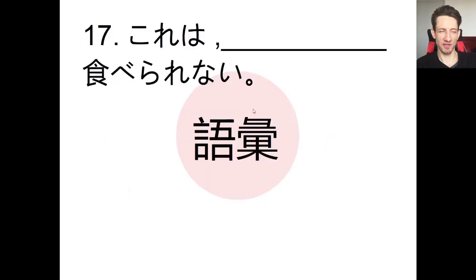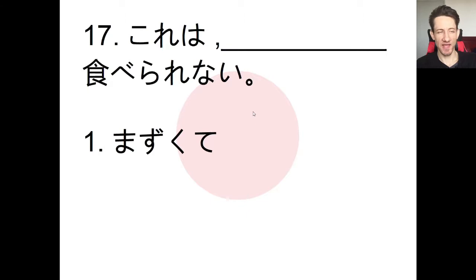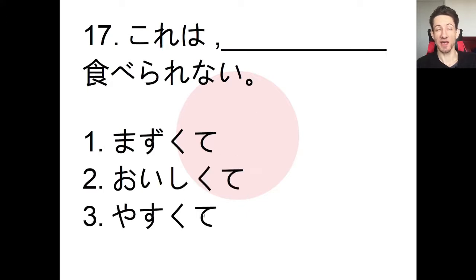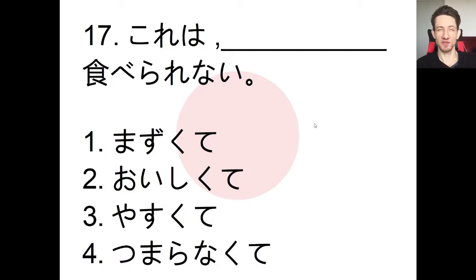Moving on, we'll take a look at our vocabulary — number 17. We have to complete the sentence by filling in the blank. The sentence is: kore wa mazukute, oishikute, yasukute, tsumaranakute, taberarenai. Pause the video here, choose an answer, and we'll check.